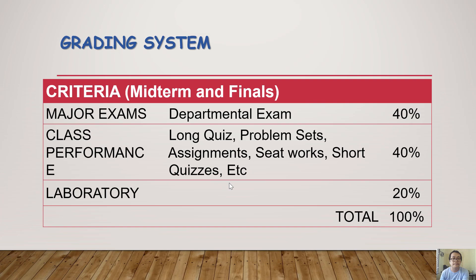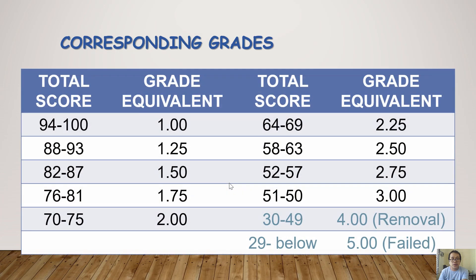Seat works, short quizzes, and activities make up part of the class performance grade. Laboratory is 20% of your total grade. For the grade equivalents: 1.0 corresponds to 94–100, and the passing grade is 50%, which corresponds to a grade of 3.0.